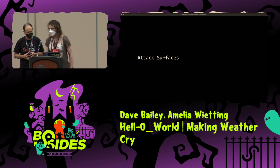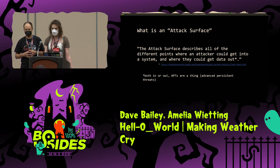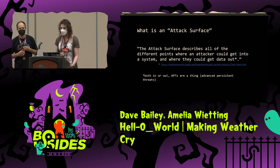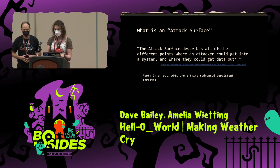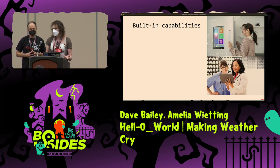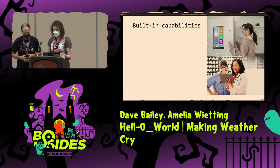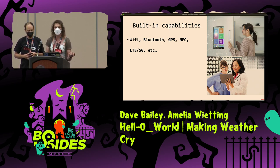One of the things Dave and I like to do is look at the attack surfaces. The attack surface describes all the different points where an attacker could get into a system and where they could get data out. That data-out part matters a lot, because with advanced persistent threats, it's about sitting there, waiting, and exfiltrating data when you have the opportunity.